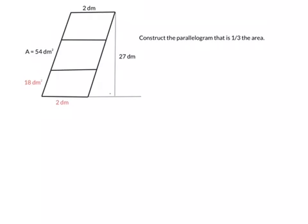Next we can discover what the base and height are of the smaller parallelogram. If you look at the figure, in red I've put 18 decimetre squared, so the red represents the new parallelogram. The base is still 2 decimetres — the black type is the original parallelogram at 54 decimetre square, and the red type is the new one. Interestingly, the base of the new parallelogram stays the same, and that is a hint for the future.